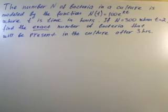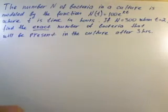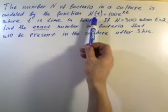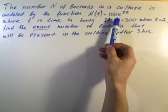Hello, I am going to work through the exponential growth formula. The number n of bacteria in a culture is modeled by the function n as a function of t equals